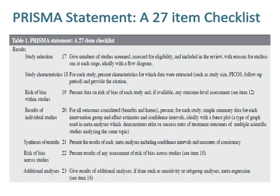Item 21 regarding synthesis of results is to present the results of each meta-analysis including confidence intervals and measures of consistency. Item 22 regarding risk of bias across studies is to present results of any assessment of risk of bias across studies (see item 15). Item 23 regarding additional analyses is to give results of additional analyses if done, such as sensitivity or subgroup analyses and meta-regression (see item 16).